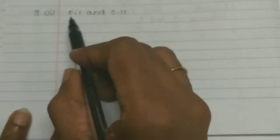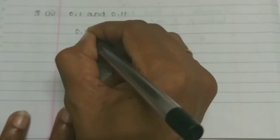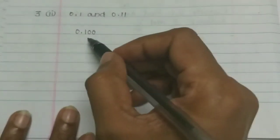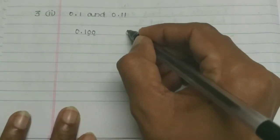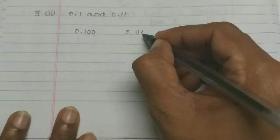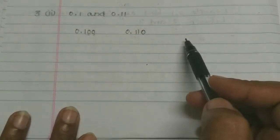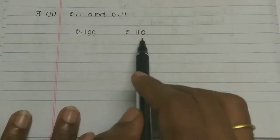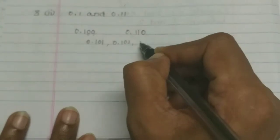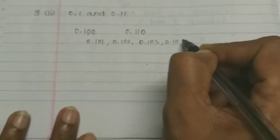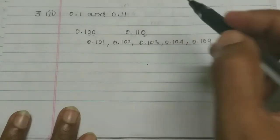Now find 4 rational numbers between 0.1 and 0.11. We convert these to 0.100 and 0.110 by adding zeros. The rational numbers between 0.100 and 0.110 are: 0.101, 0.102, 0.103, 0.104, and 0.109. You can choose any numbers up to 0.110.